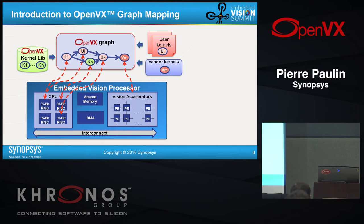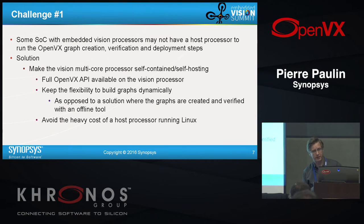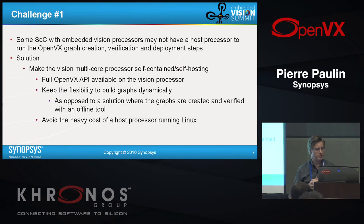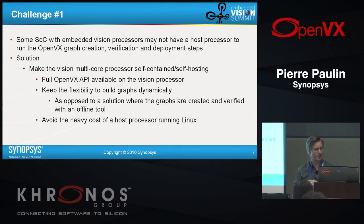The system is homogeneous on the RISC side with a quad-core and heterogeneous in terms of the two different processing subsystems. Challenge number one: in this space of a couple of millimeters square and 100 milliwatts, you often don't have the power budget or area budget for a host processor. So it's really important to have a self-contained, self-hosting solution. We have the option to work with a host, but the full OpenVX API can also run on the vision processor itself. That avoids the cost of a host processor running Linux.